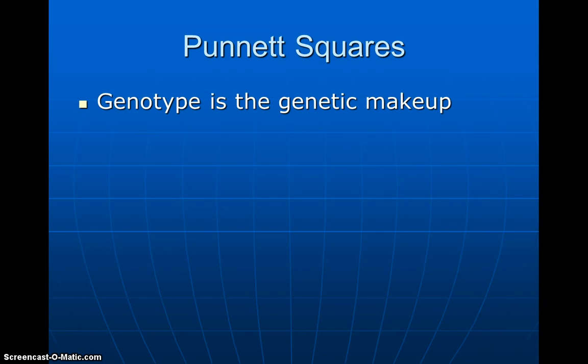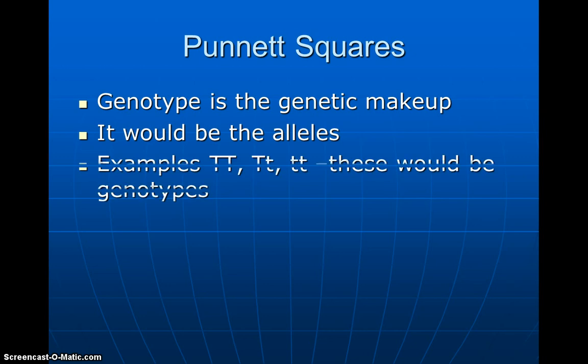The genotype is going to be the genetic makeup. It would be the alleles. So the examples of the genotype would be the big T, big T, big T, little t, and then two little ts. Those would be the genotypes.